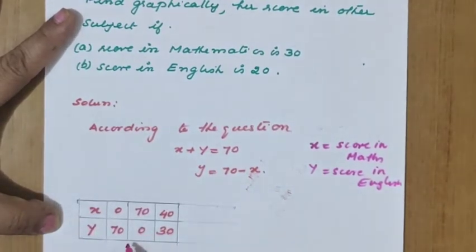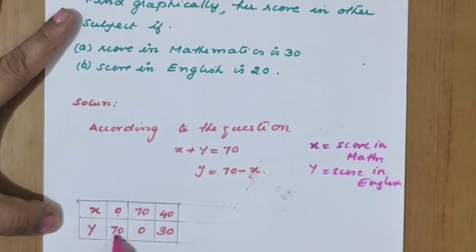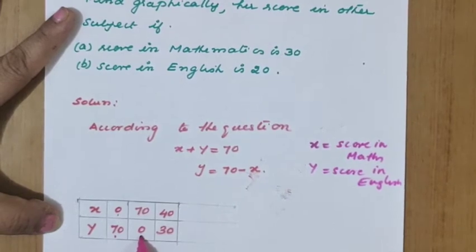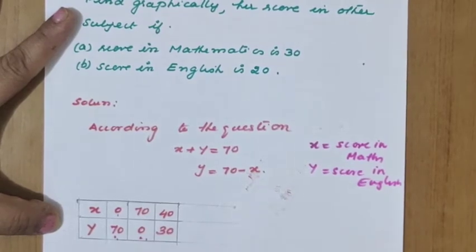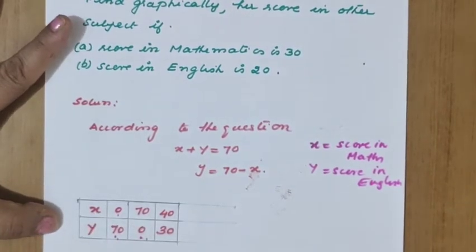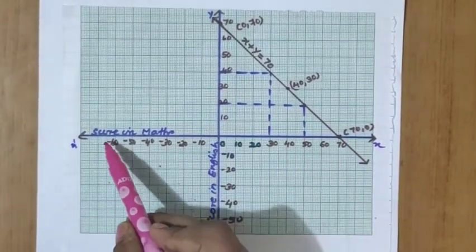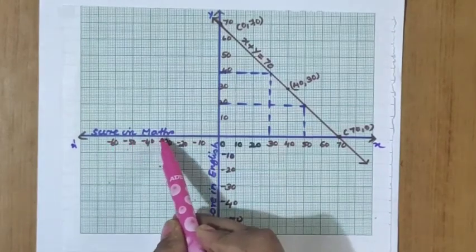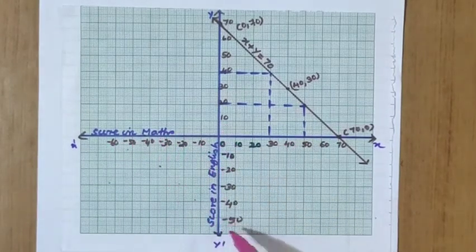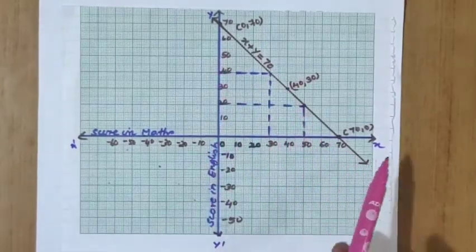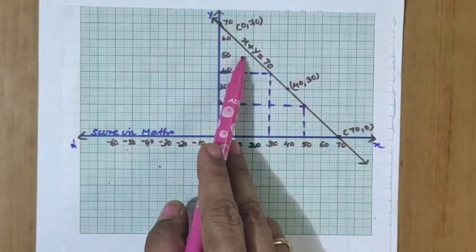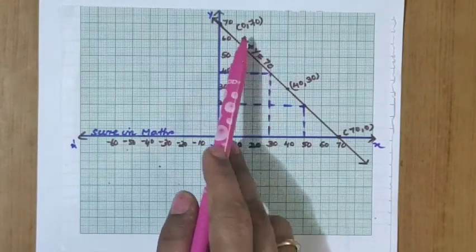So we have x plus y equal to 70, meaning y equals 70 minus x. We find solutions: when x equals 0, y equals 70; when y equals 0, x equals 70; and one more point, say x equals 40, y equals 30. These three solutions are used to plot the graph. The x axis is labeled 'score in mathematics' and the y axis 'score in English'. We plot the points and draw the straight line, labeling it x plus y equal to 70.